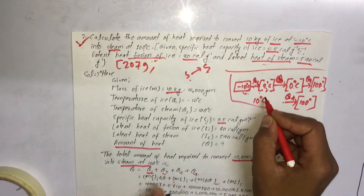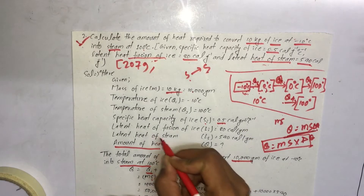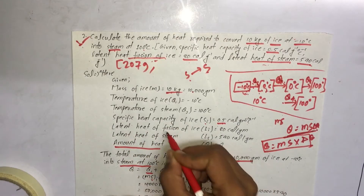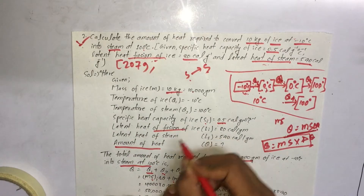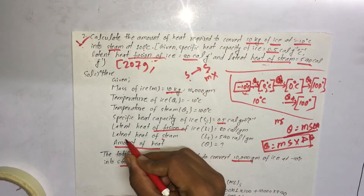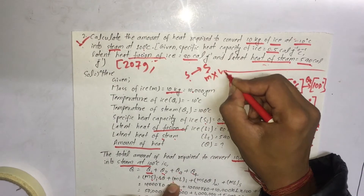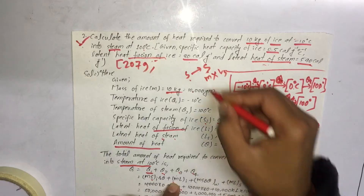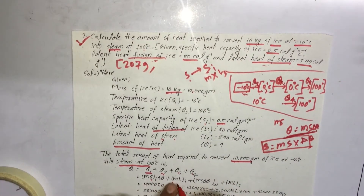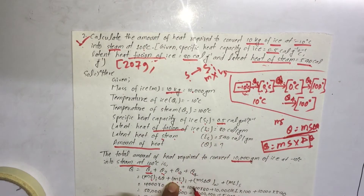For the change from liquid to steam, the formula uses mass into latent heat of steam. The latent heat of fusion applies for solid to liquid change, and the latent heat of steam applies for liquid to steam change. Q4 equals mass into latent heat of steam.